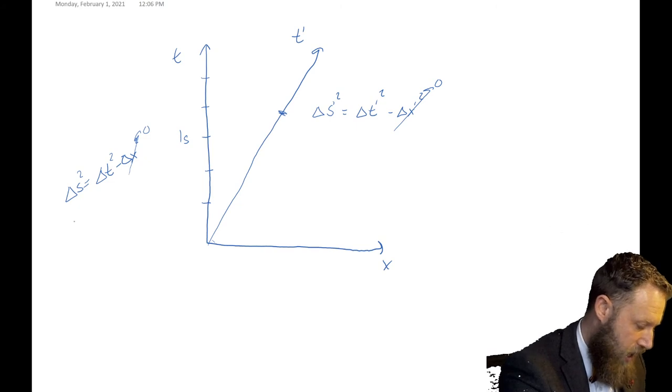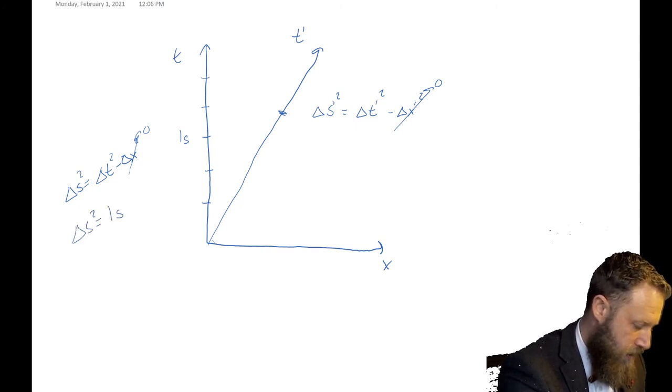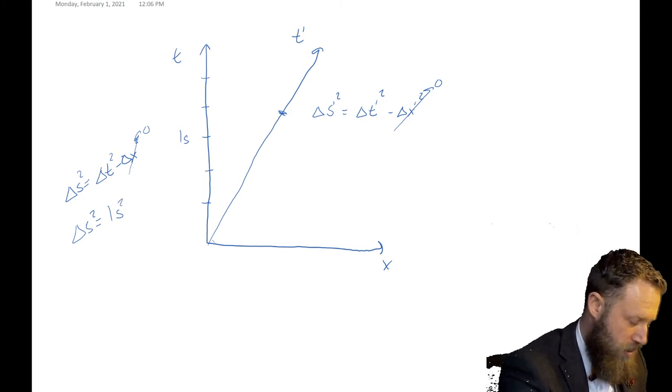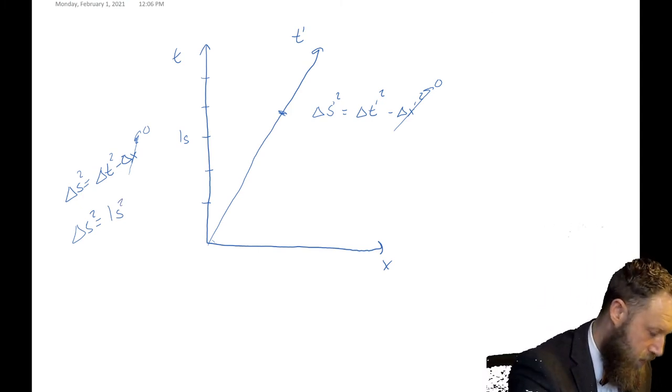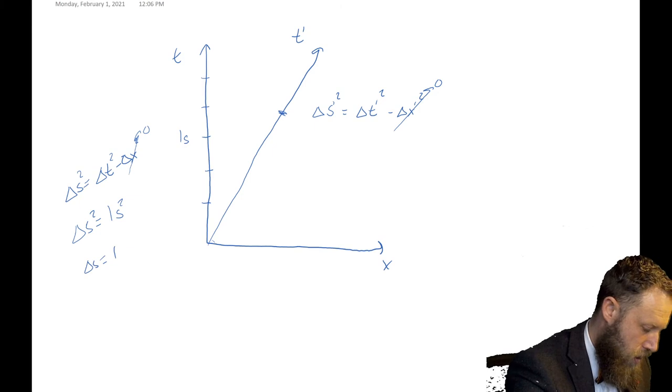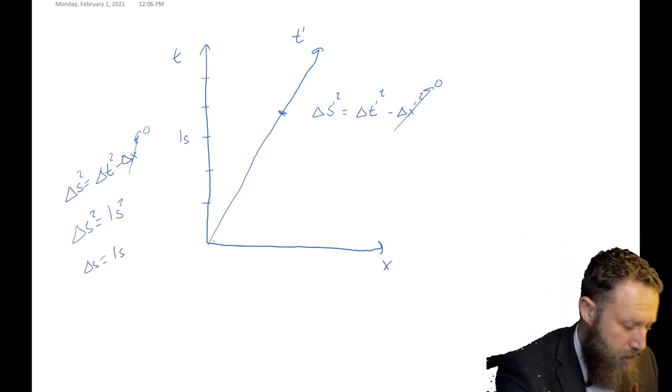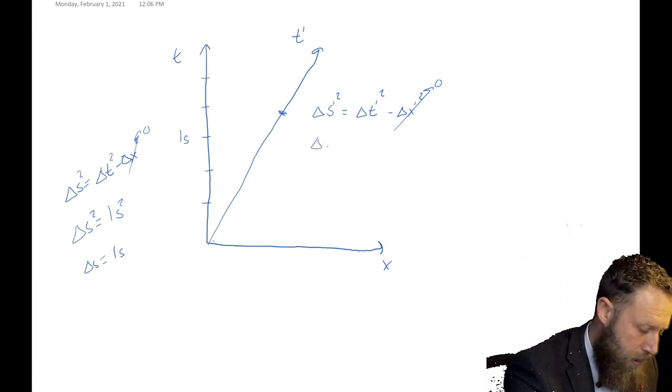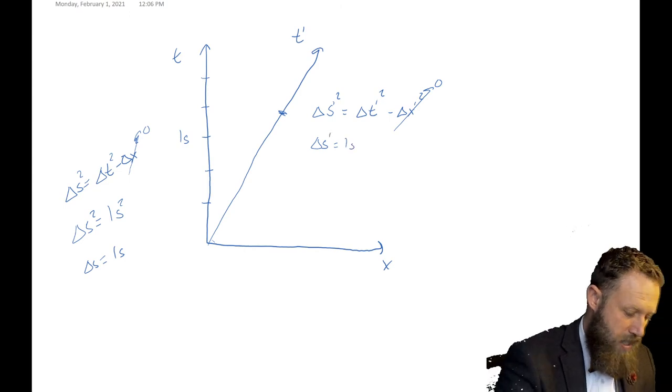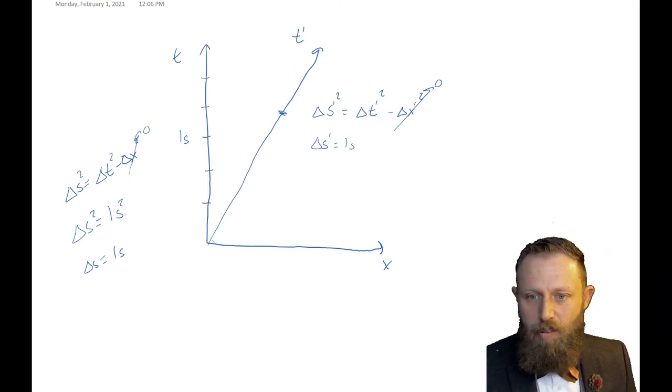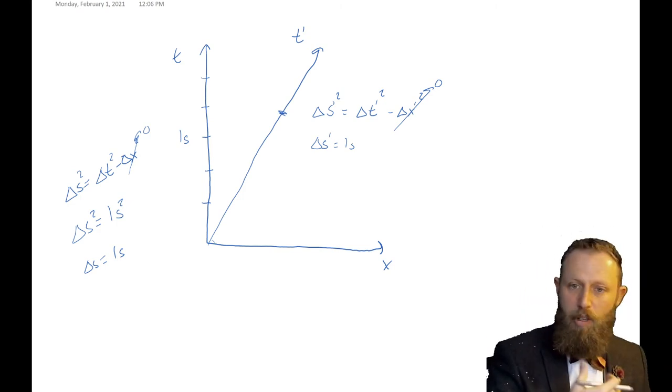And one thing you hopefully remember is that space-time intervals are the same across all frames. So if we have a delta s squared equal to one second squared, which is the same as a delta s equal to one second. Then this delta s prime that's one second is also the same space-time interval.